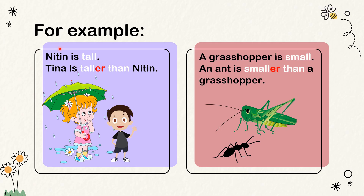For example, Nitin is tall, and Tina is taller than Nitin. In this picture, we can see Nitin — he is tall — but Tina is taller than Nitin.